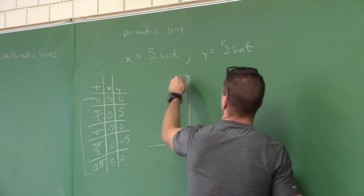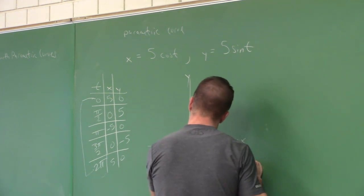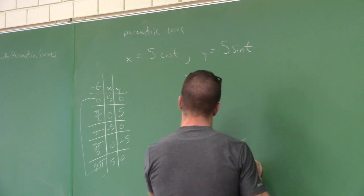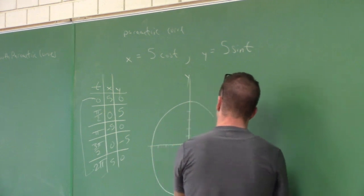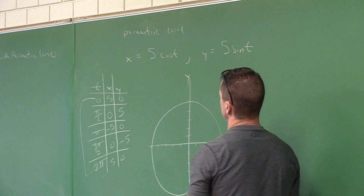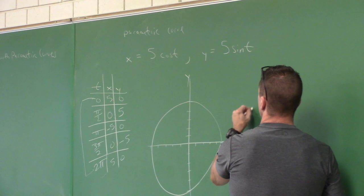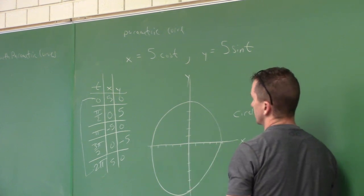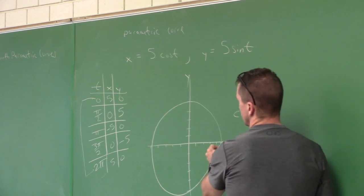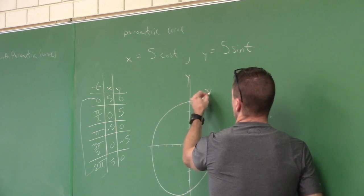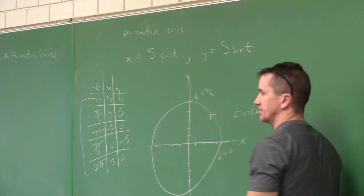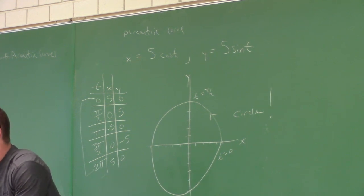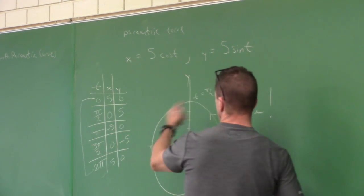Let's sketch the curve. It comes out to be a circle. Which way is it going as t increases? It's going counterclockwise. At t equals zero we were at (5, 0), and at t equal pi over 2 we're going this way. I'll put an arrow to indicate the direction. In section 10.1, the directions say to sketch a curve and draw an arrow to indicate the direction as t increases. I only plotted positive numbers, but this pattern repeats.